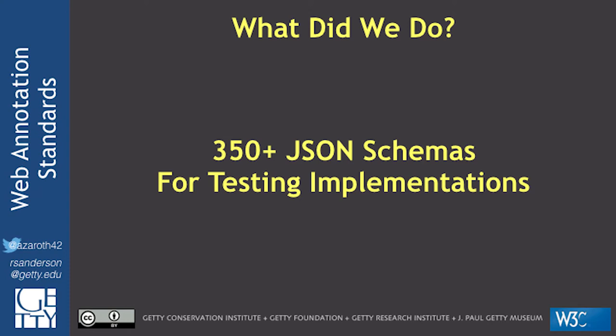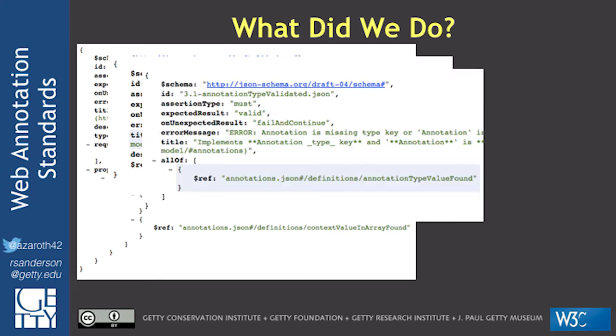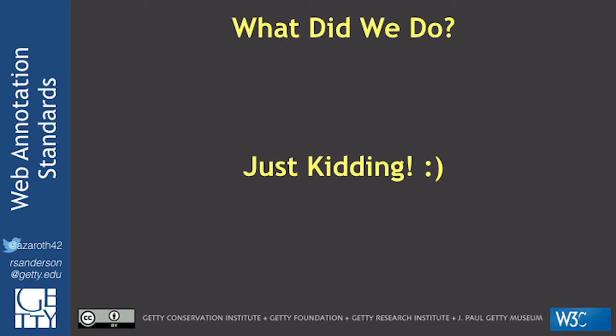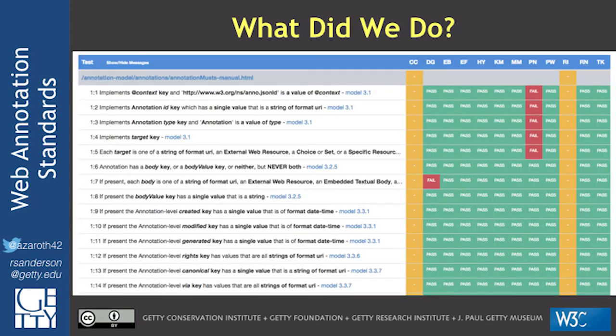One of the requirements for getting through the specification process is that everything needs to be tested and implemented. We came up with more than 350 JSON schemas to help developers and product owners test their implementations, starting with the broadest: is this an annotation at all? We tested 12 implementations that claimed compliance, with mostly passing results. A few required features failed in some implementations. The requirement is at least two implementations for every feature, and we have far more than that.